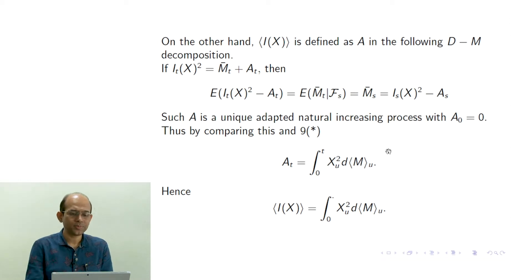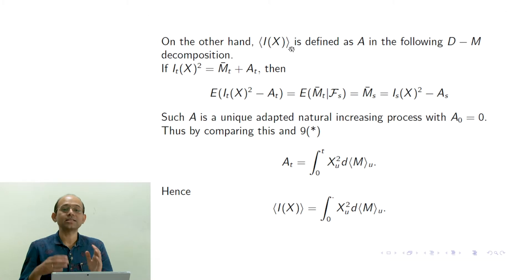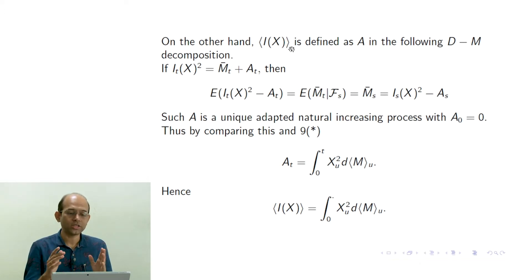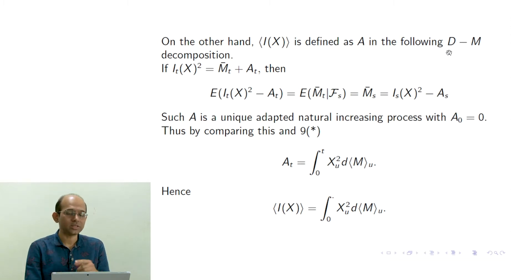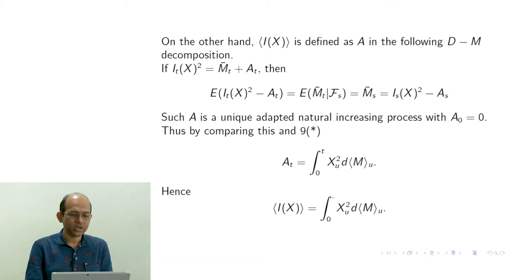Now we consider the quadratic variation of I_X, which has not been discussed earlier. I_X is the stochastic integration of X with respect to a square integrable martingale, and I_X itself is also a square integrable continuous martingale. So we can talk about its quadratic variation. The quadratic variation of I_X is the increasing natural process A appearing in the Doob-Meyer decomposition of (I_X)², i.e., (I_X)_t² = M̄_t + A_t.